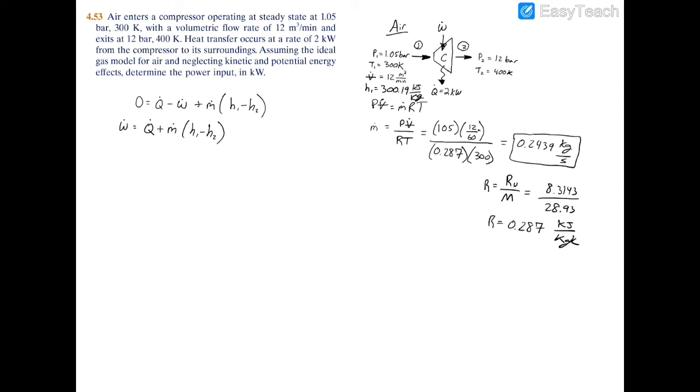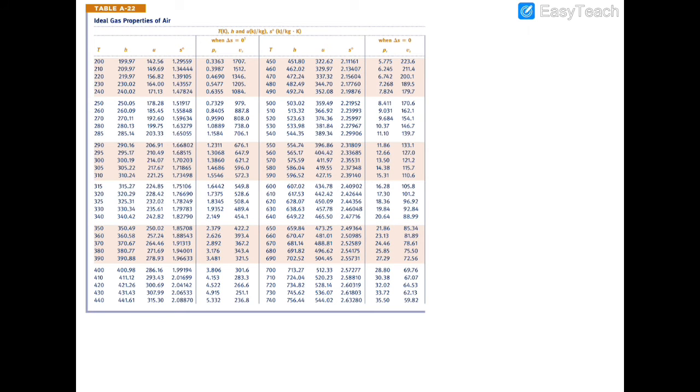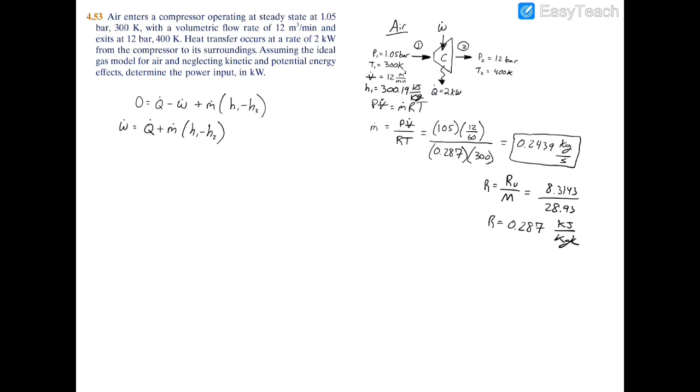Now at the exit we have 400 Kelvin. Turn back to that table, go to 400 Kelvin, and you have that the specific enthalpy is 400.98 kilojoules per kilogram. I'll fill that in right over here on the right side.